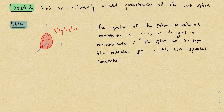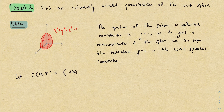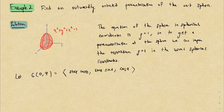So the parameterization is: x = sinφ cosθ, y = sinφ sinθ, and z = cosφ. To describe the whole sphere, θ goes from 0 to 2π and φ goes from 0 to π. That's our parameter domain.